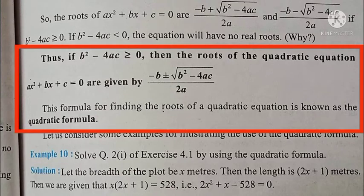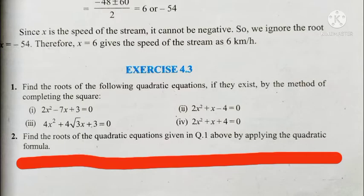The roots of a quadratic equation ax² + bx + c = 0 are given by minus b plus or minus square root of b² minus 4ac, divided by 2a. This formula for finding the roots of the quadratic equation is known as the quadratic formula. Today I am explaining Exercise 4.3, Question Number 2 from the maths textbook of CBSE Class 10.